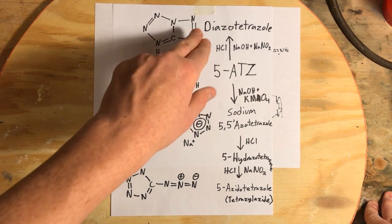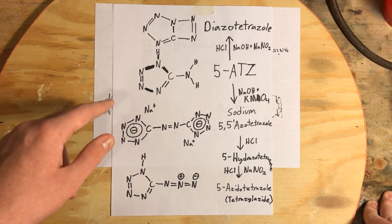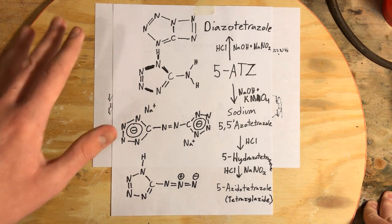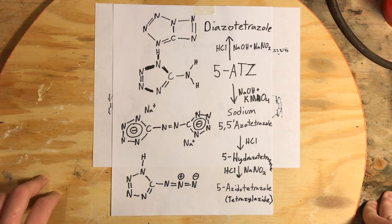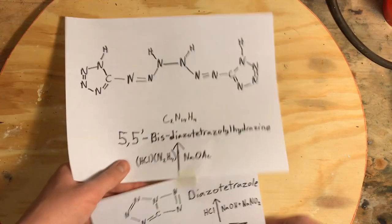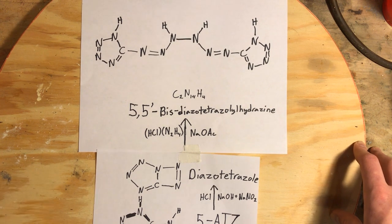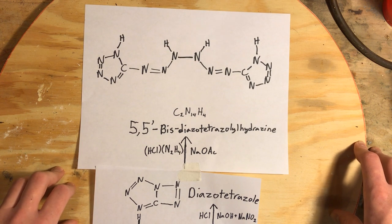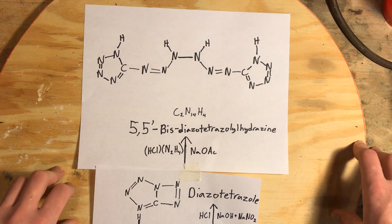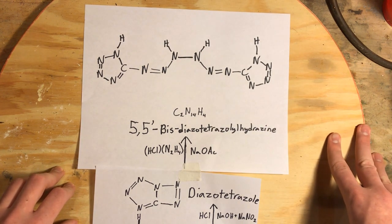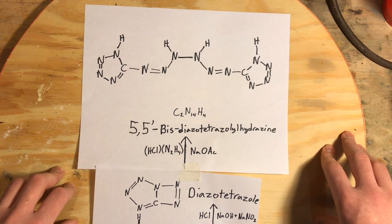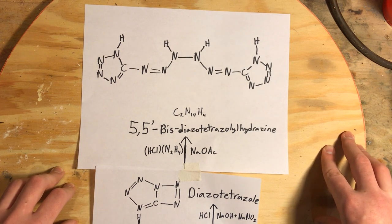If we successfully make diazotetrazole, you can acidify the solution, which puts it in a stable state. It forms a different compound which can then be basified again to form an intermediate to 5,5-bis-diazotetrazolyl hydrazine — which is once again one of those compounds that has that nice ratio of 1 to 7. I haven't seen any references to this besides the Engager papers anywhere. Hopefully we can look into making this and testing its properties as such a nitrogen-rich compound.